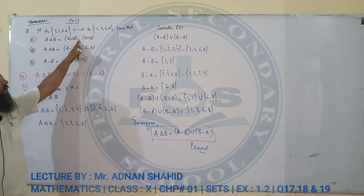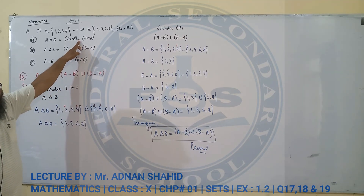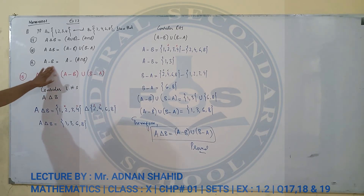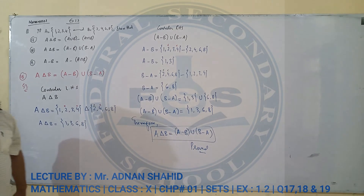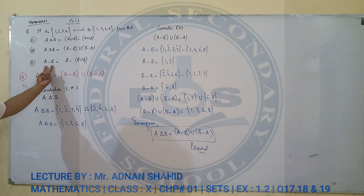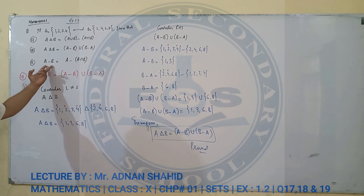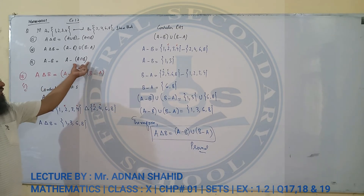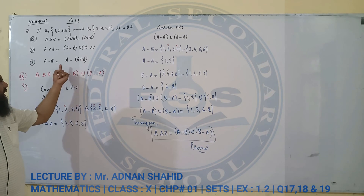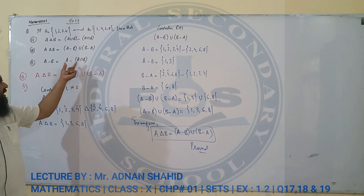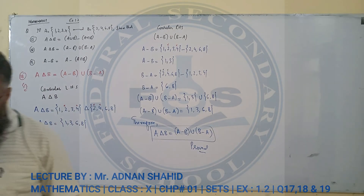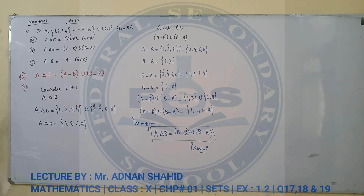फिर minus operator apply होगा। Question number 19 में symmetric difference का कोई symbol नहीं है। Left hand side consider करें: A minus B. Right hand side: A minus A intersection B. इन तीनों सवालों को इसी तरह prove करें।